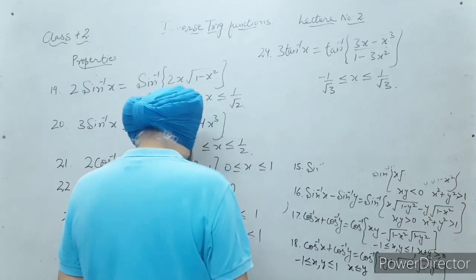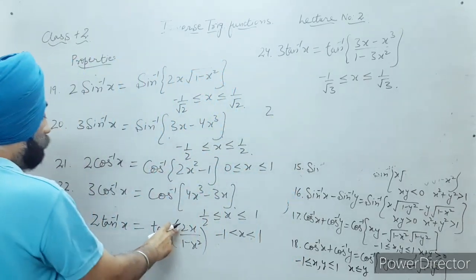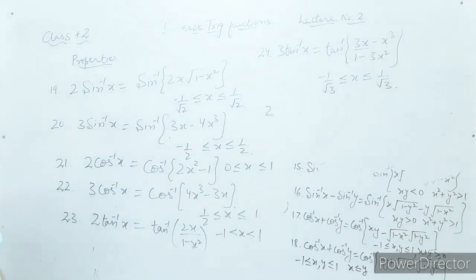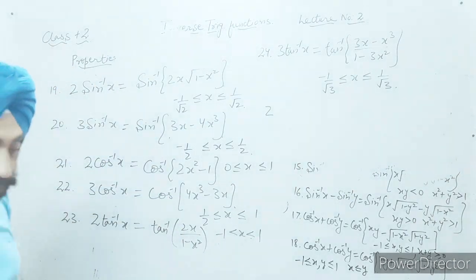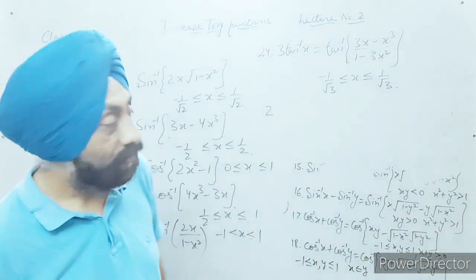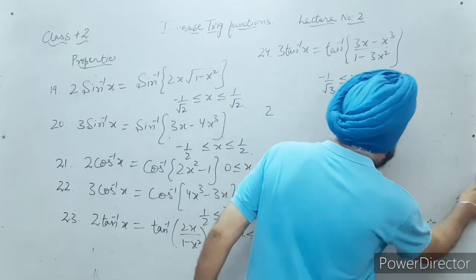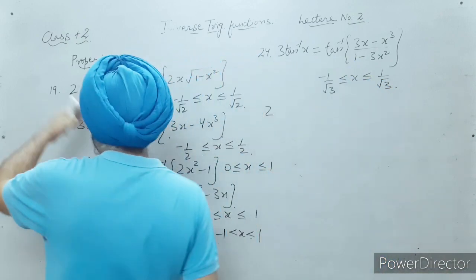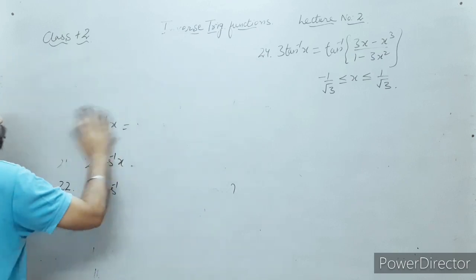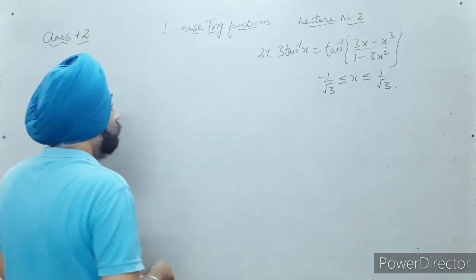To summarize: 2 tan inverse x equals tan inverse of 2x upon (1 minus x²), for minus one less than x less than one. All these properties will be used in solving the numericals based on inverse trigonometric functions. We shall now start with a few sums so that the concept of these properties becomes clear.